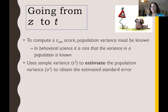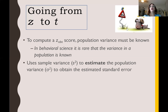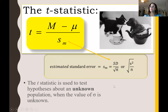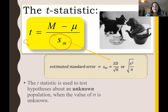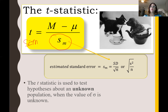Instead, we use the sample variance to estimate the population variance, so there are some extra steps. We use what is called the estimated standard error to estimate the variance we would see in the population of scores, because we don't have that information. In the Z test, our denominator used SEM, the standard error of the mean, because we actually knew the standard error from our population information. Now we need to estimate it, so we use the notation S subscript M, which is the notation for estimated standard error.